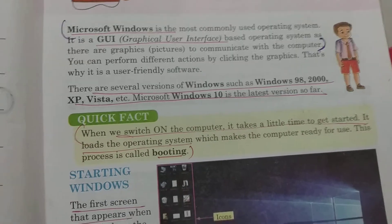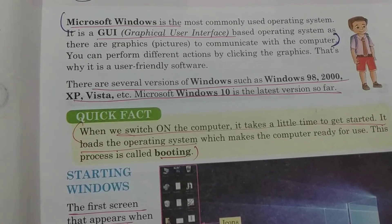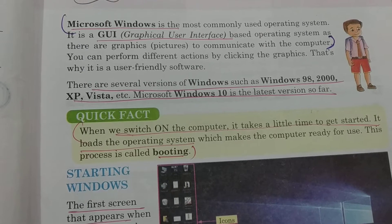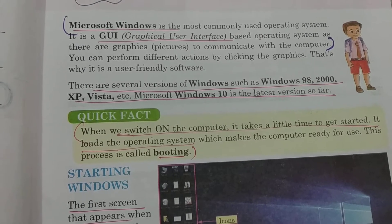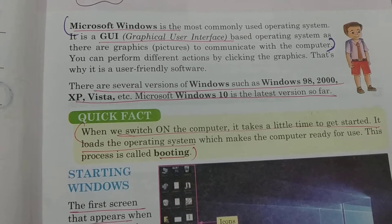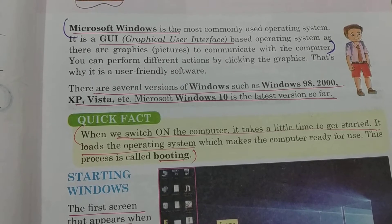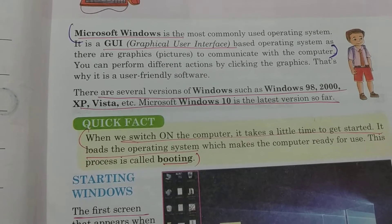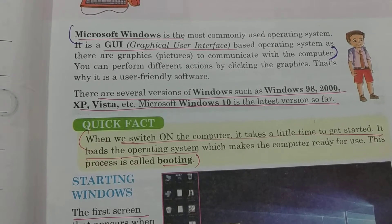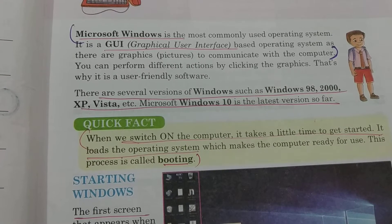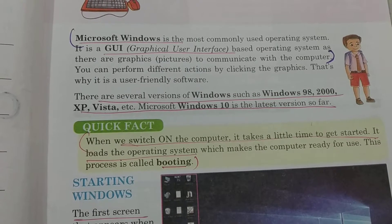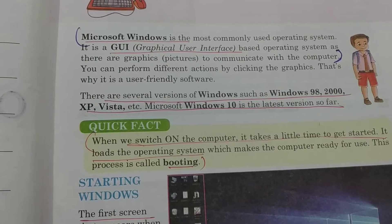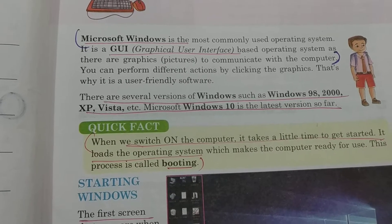Graphical user interface means there are some graphics — that is, pictures — which help us to communicate with the computer. If asked for different versions of Windows, you can name any: Windows 98, 2000, XP, or Vista. If asked which is the latest version of Windows, it is Windows 10. If asked what Microsoft Windows is based on, your answer will be graphical user interface.